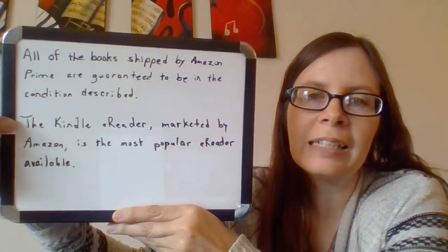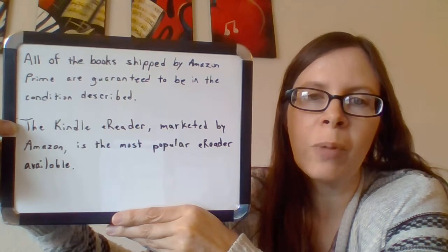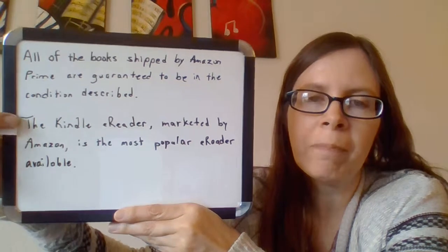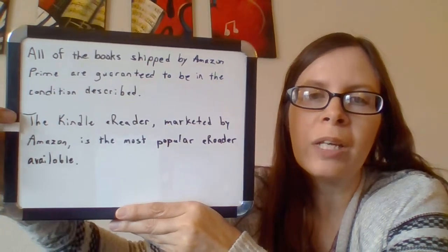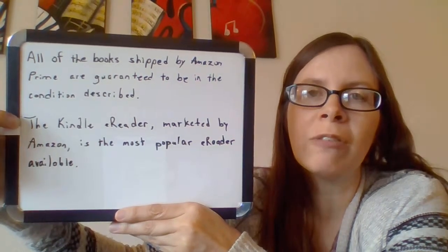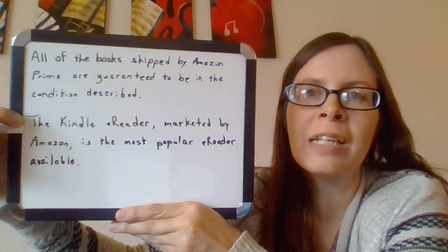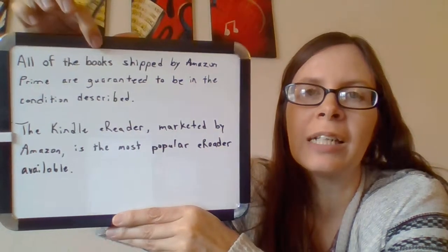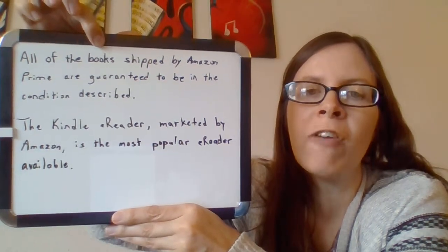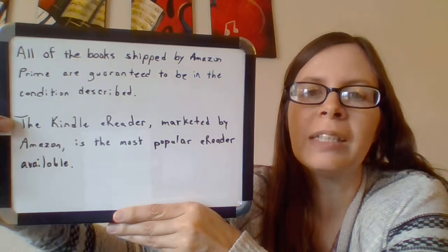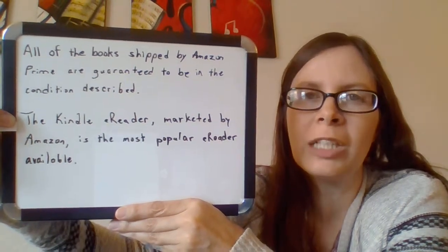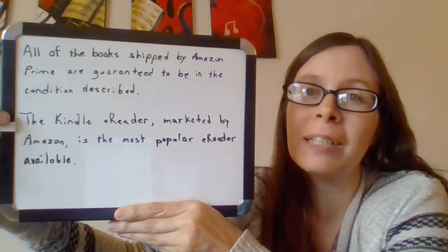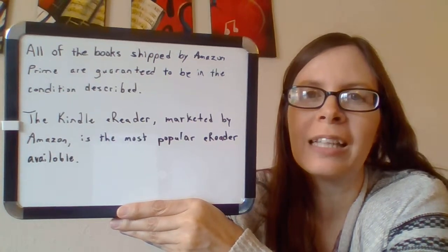The second sentence says: 'The Kindle e-reader, marketed by Amazon, is the most popular e-reader available.' Here, we already know which e-reader is being spoken of — the Kindle e-reader. We don't need anyone to clarify which e-reader. So 'marketed by Amazon' is just extra information. It is non-essential, and that is why it has commas on both sides. I'm going to show you one more thing before you take the quiz.